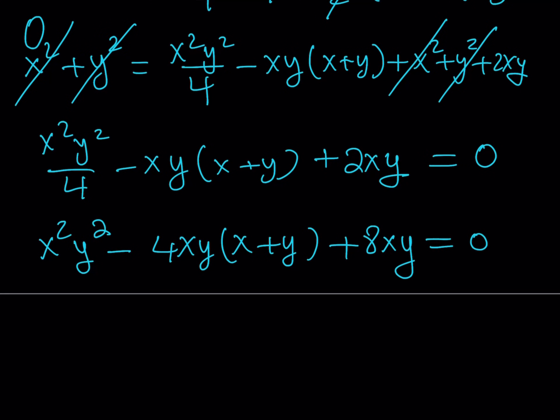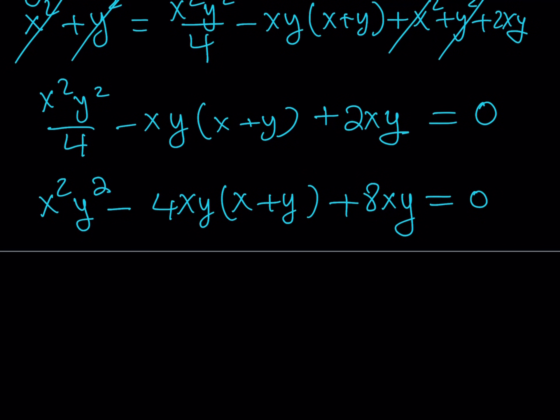So notice that the first term contains x squared y squared, the second one has xy in it, and the third one has xy in it. In other words, xy is a common factor. So why not factor it out? Especially when certain things equal zero, you should definitely think about factoring. Because in the end, we were trying to solve for x and y, and factoring would definitely help. So let's go ahead and take out xy here.